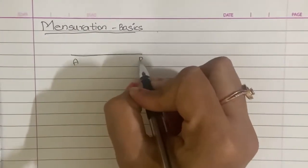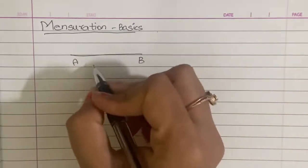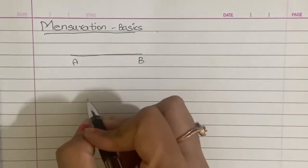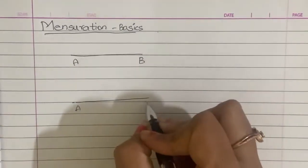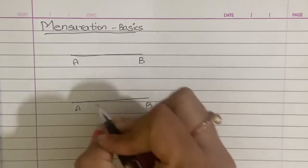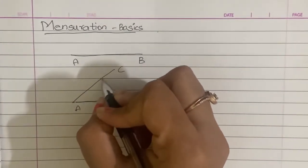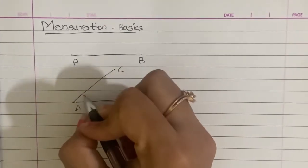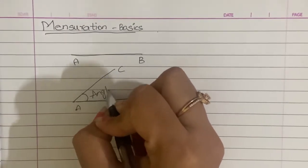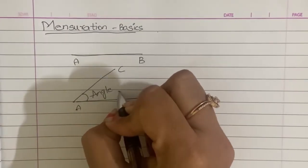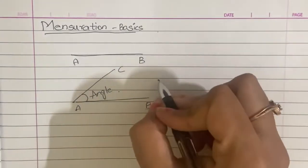A B is the same line. Next I will draw one more line, A C. Now I will show you the angle. So, different angles.